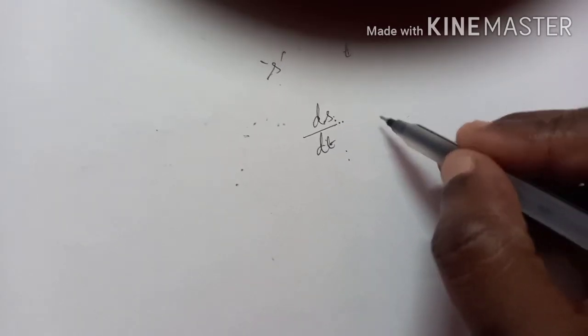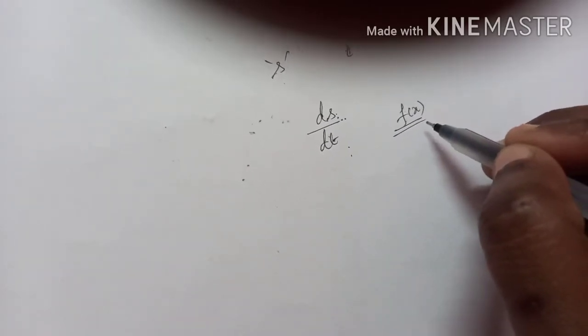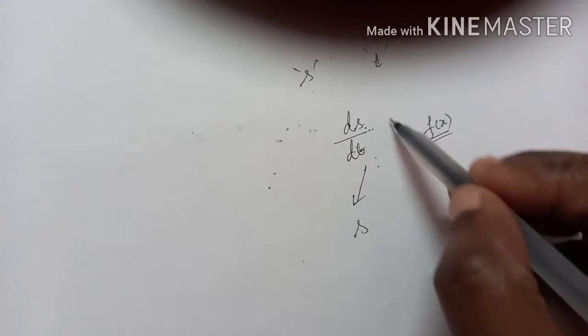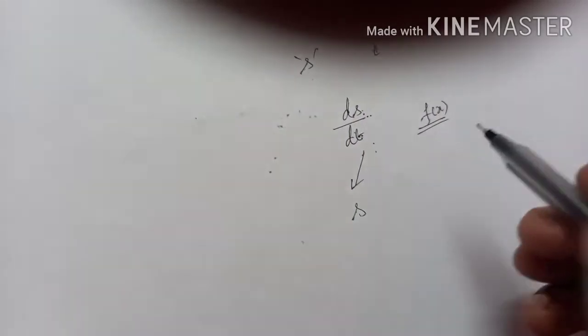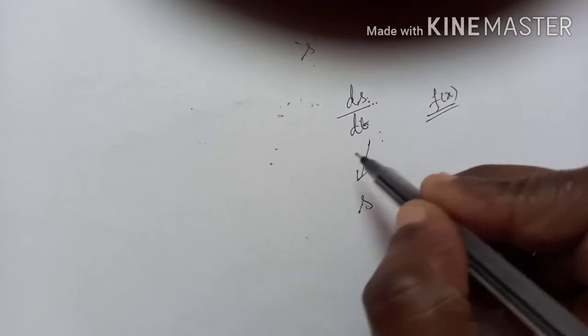The process of finding a function given its derivative is called integration. Finding S from dS by dt is an example of integration. So, integration is the reverse of differentiation.